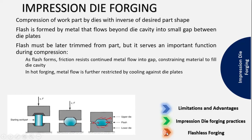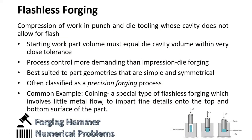The last type is flashless forging, also known as closed die forging. In this process, the die is in a closed cavity and there is no chance of flash formation. The starting part volume must equal the die cavity volume, so process control is more demanding than impression die forging. However, the geometries obtained are very symmetrical and we can achieve very controlled geometry with close tolerances — referred to as precision forging. A common application of flashless forging is coining, a special type of forging process used to impart fine details onto the top and bottom surfaces of coins used in currency.